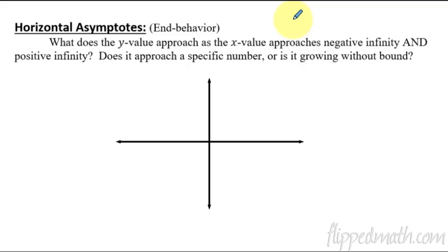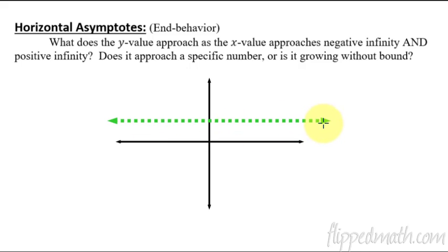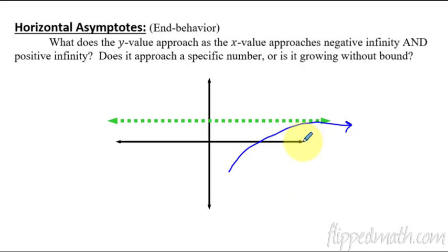To start us off, we've got to make sure we remember stuff about horizontal asymptotes. As a brief reminder, when we talk about a horizontal asymptote, it is referring to the end behavior of a graph. If I have this imaginary horizontal line, this would represent a horizontal asymptote if the graph is approaching where this line is — that would be considered a horizontal asymptote.